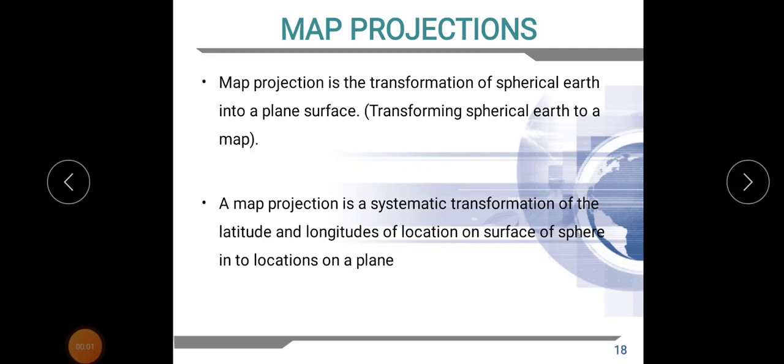Good afternoon students. We have started the topic Geographic Information System. In the last class we discussed about different types of coordinate systems: projected coordinate system and geographic coordinate system. The geographic coordinate system is a three-dimensional coordinate system, and the projected coordinate system is a two-dimensional coordinate system.